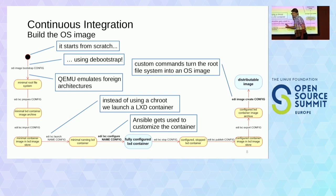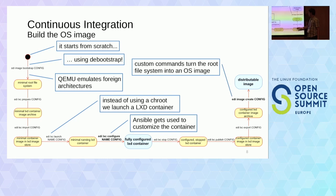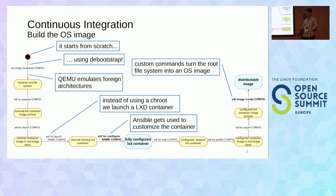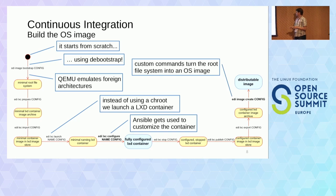Once inside the LXD container, we install additional packages and change configurations using Ansible. Then once Ansible is done, we stop the container and export it. After some additional tweaks we get a Mender artifact or a flashable image, along with complete OS image documentation as a PDF document. These are the artifacts produced at the end of the build.